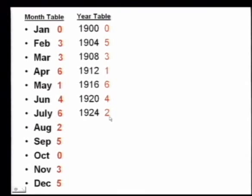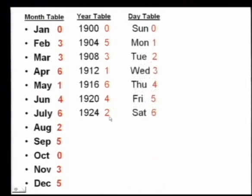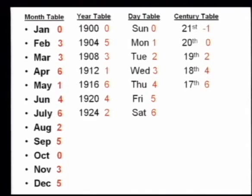Now I am going to show you the day figure. The day table: Sunday stands for 0, Monday for 1, Tuesday for 2, Wednesday for 3, Thursday for 4, Friday for 5, and Saturday for 6. You will arrive at a figure and this will correspond to the day. Also, you have to remember the century figure: the 21st century has minus 1, the 20th century has 0, the 19th century has 2, the 18th century has 4, and the 17th century has 6.